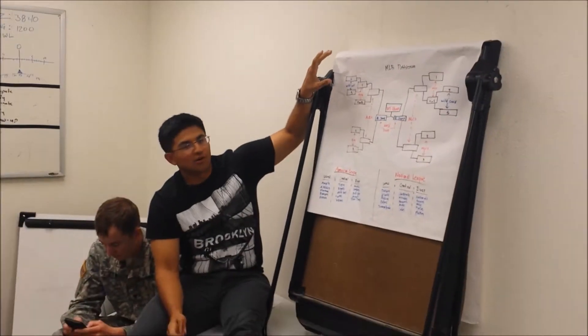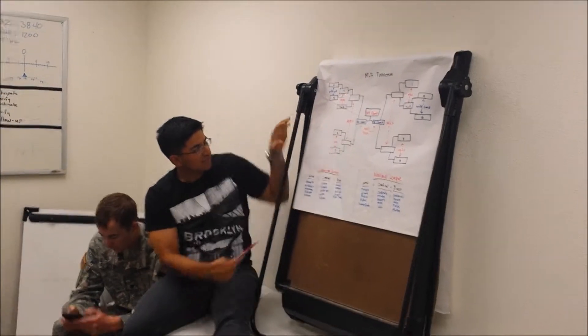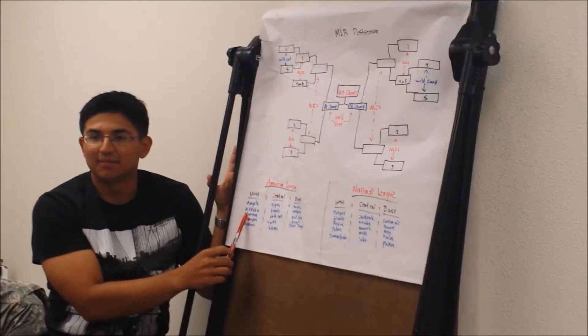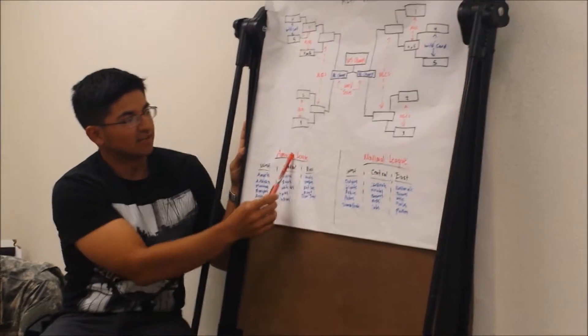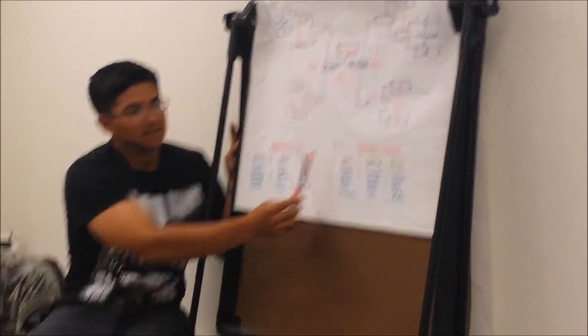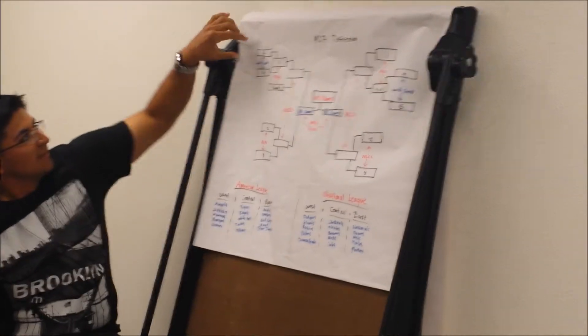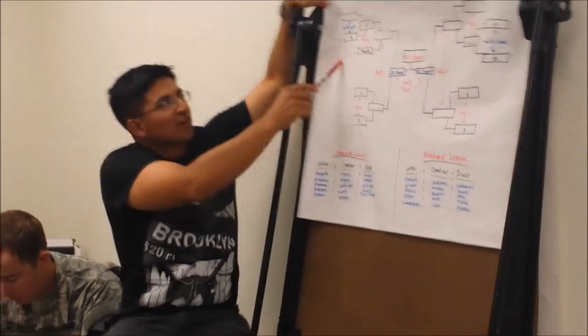4 and 5 is called the wild card winners. They are the top two second best place teams of each league. You've got the top two second best place teams of the American League, and the top two second best place teams of the National League. And 4 and 5, they make the wild card.